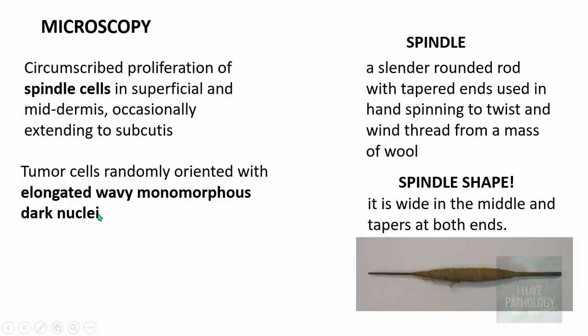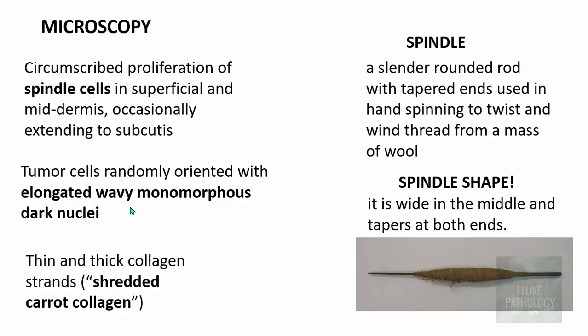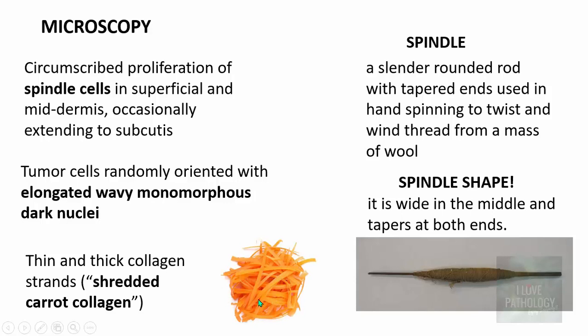A characteristic feature in neurofibroma is these cells with wavy nuclei. It is also composed of a mixture of cell types — including fibroblasts which synthesize collagen in the form of thick and thin collagen strands that look like a shredded carrot, referred to as shredded carrot collagen appearance.